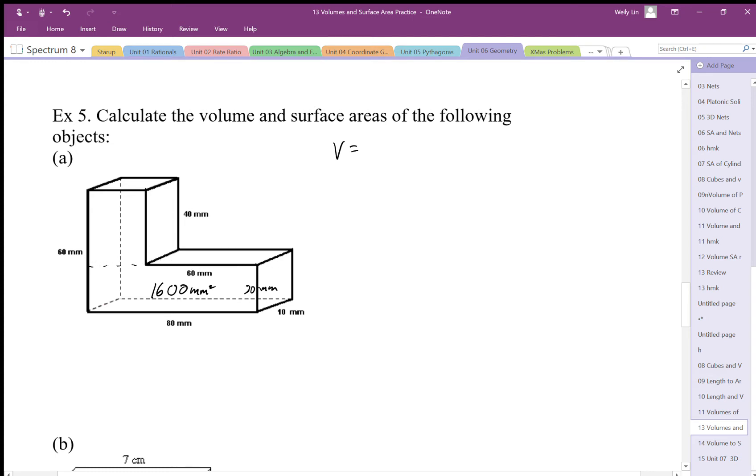So 40 times 20 is going to give me 800 millimeters squared. Okay, so the area of the surface - I'm going to do in red - the area of this surface is 2,400 millimeters squared.